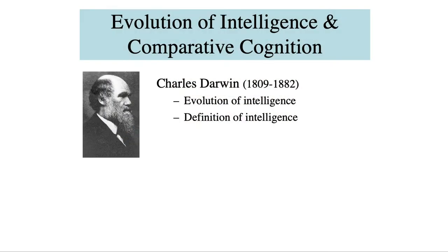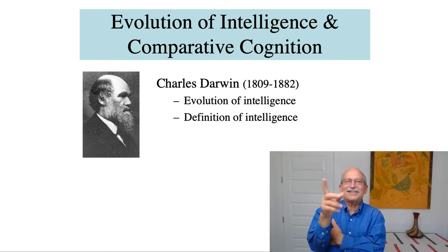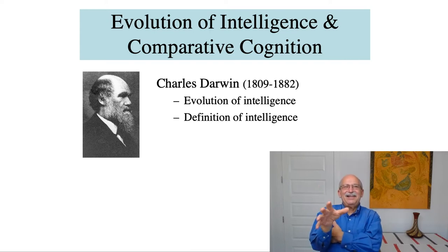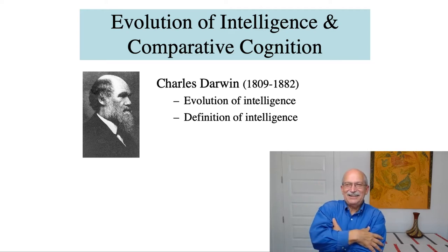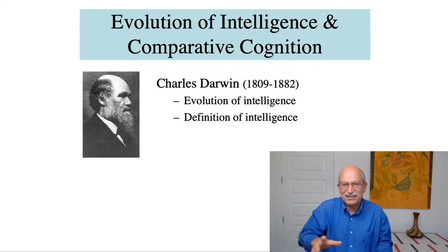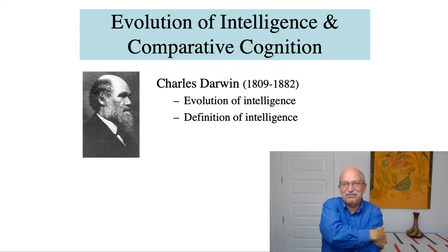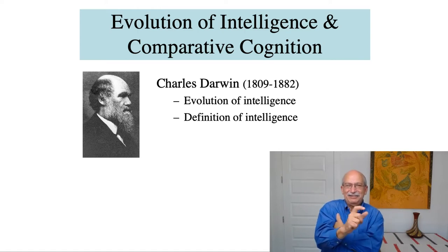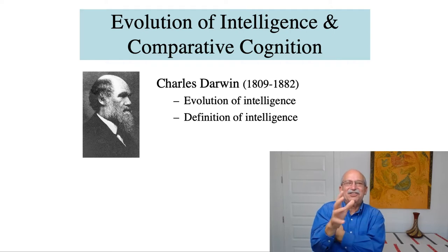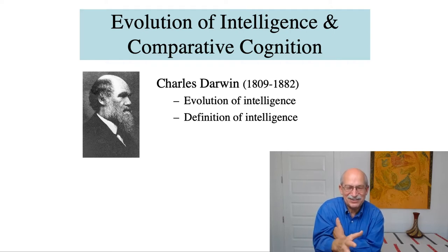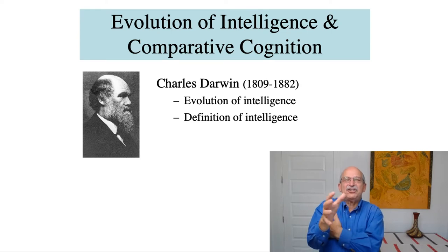It all began with Charles Darwin. We know Charles Darwin because he formulated the theory of evolution, and his conception of evolution is not what has turned out to be correct. We often think about Charles Darwin and survival of the fittest. But it's not the survival of the fittest that survives, but it's the survival of the genes of those individuals who have the greatest number of progeny.